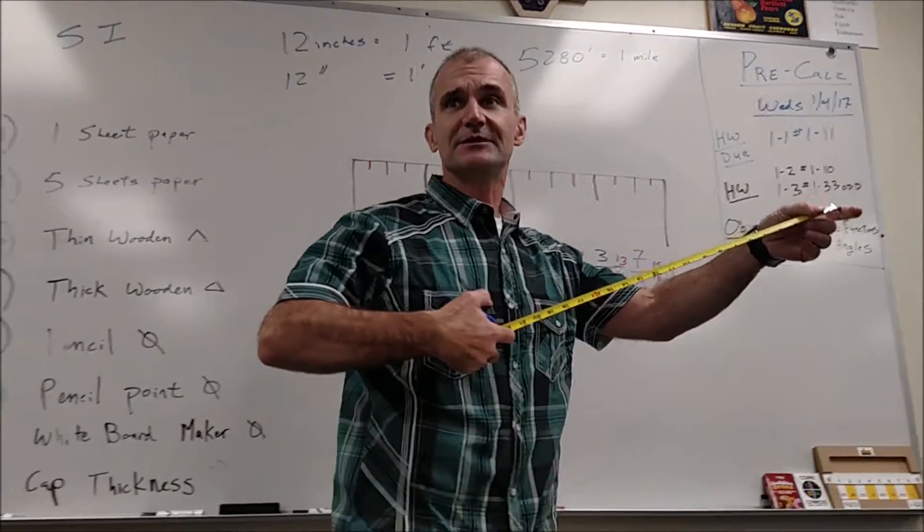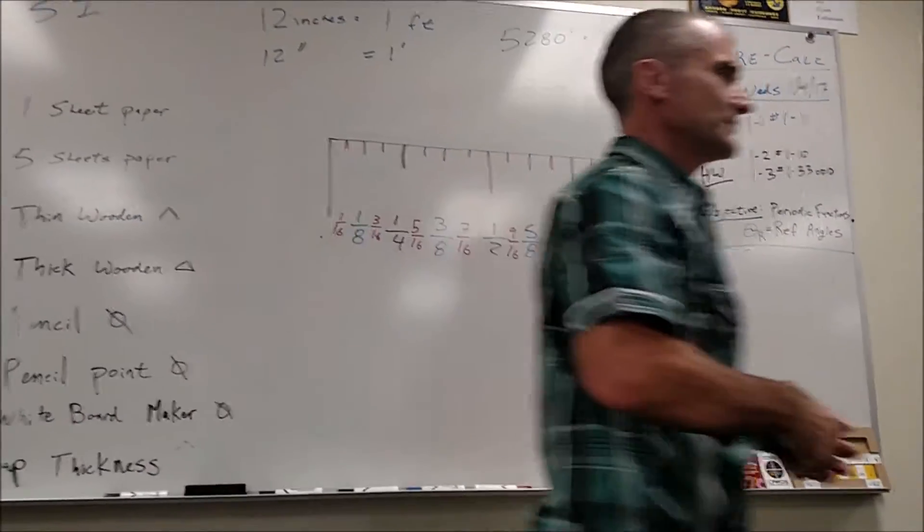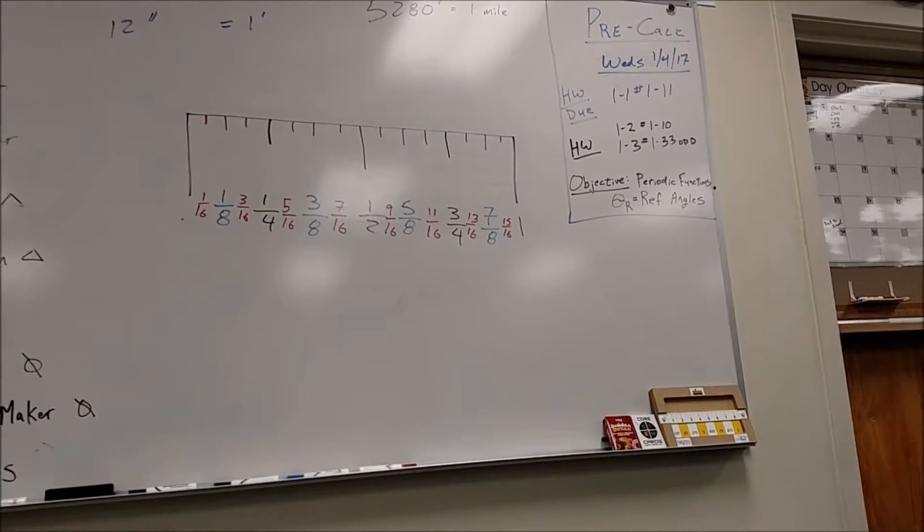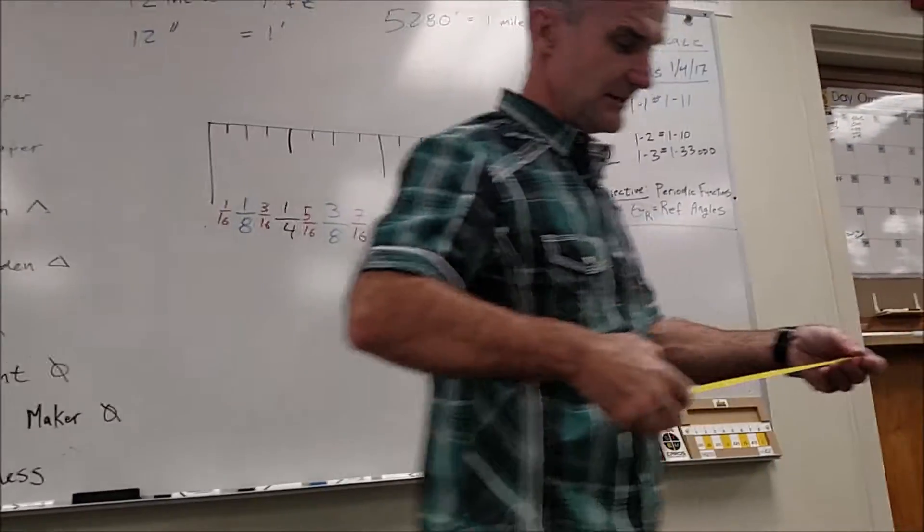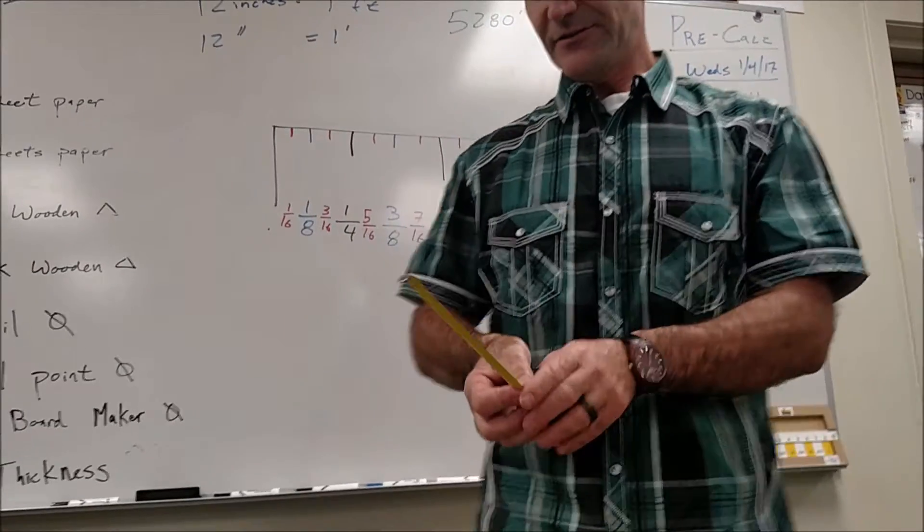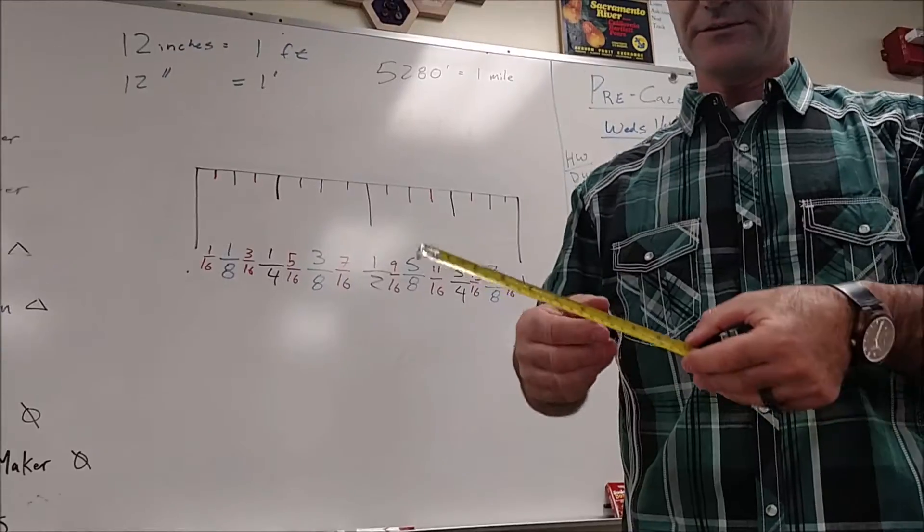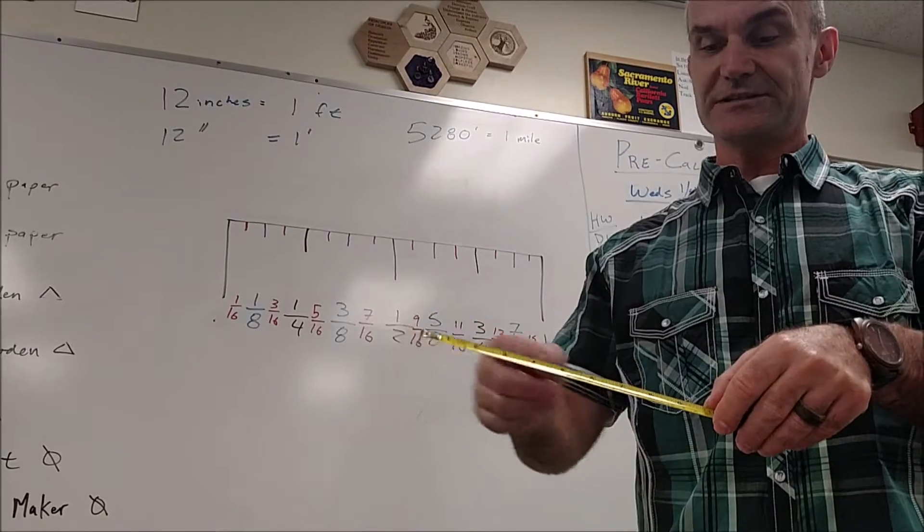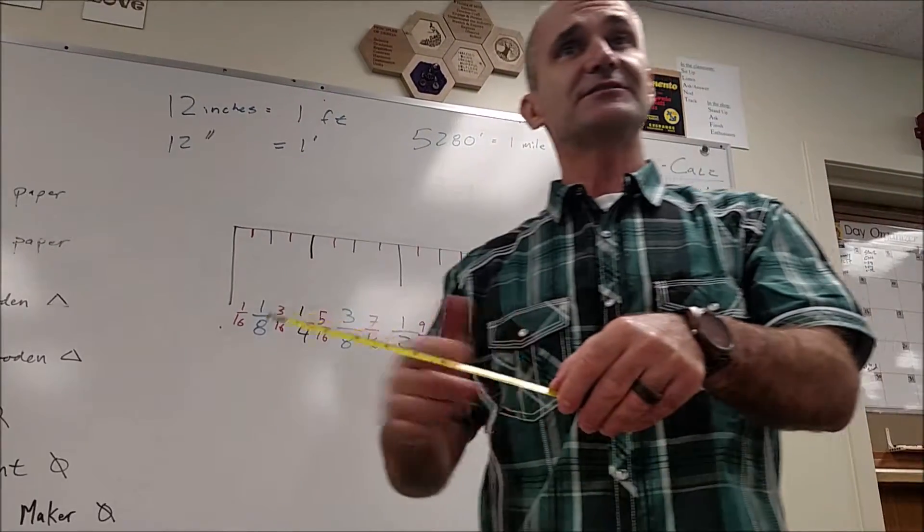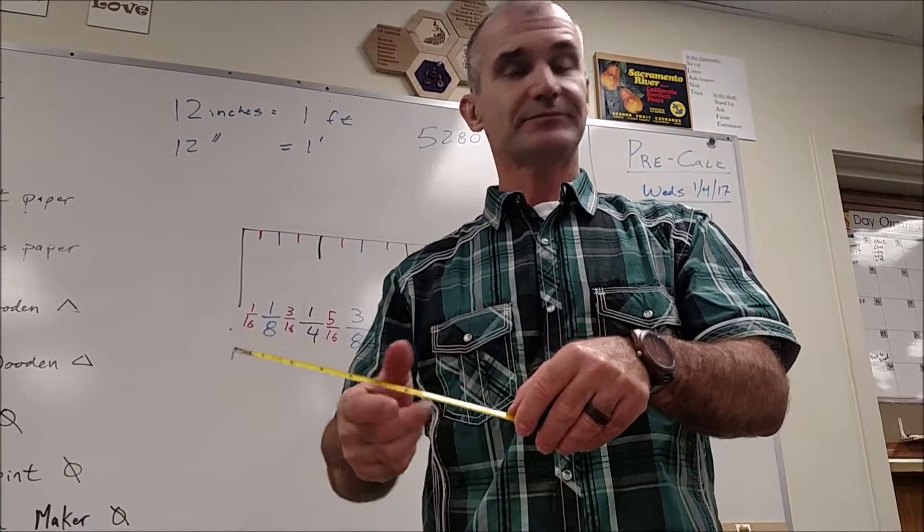A lot of tapes only have sixteenths on them, but if you go into a cabinet tape, a cabinet tape usually has thirty-seconds for the first six inches or foot. This one's thirty-seconds for the first six inches and then sixteenths after that.